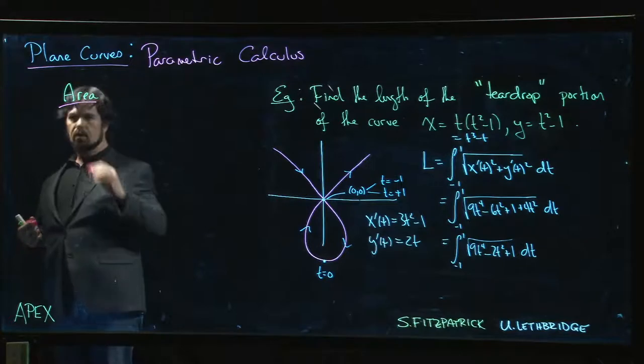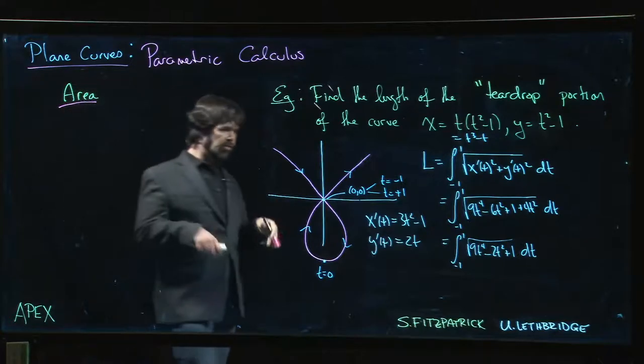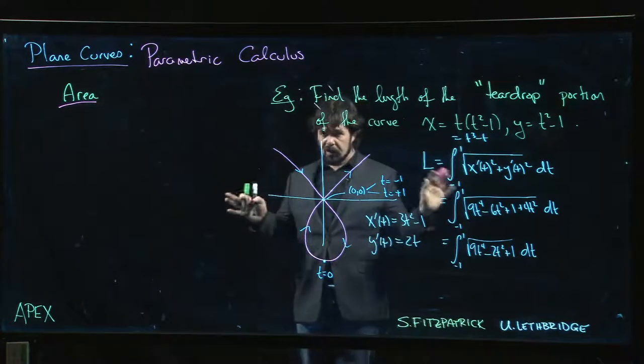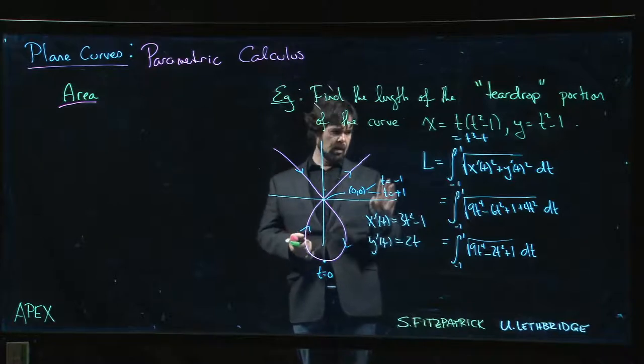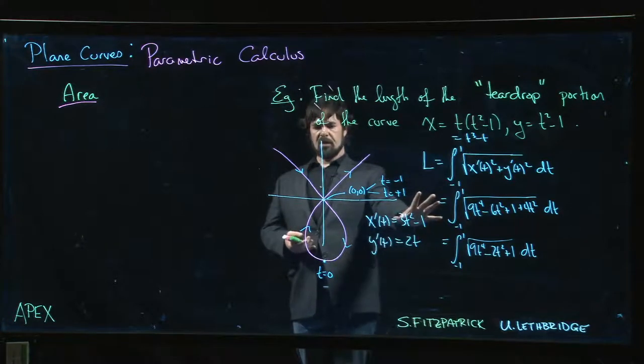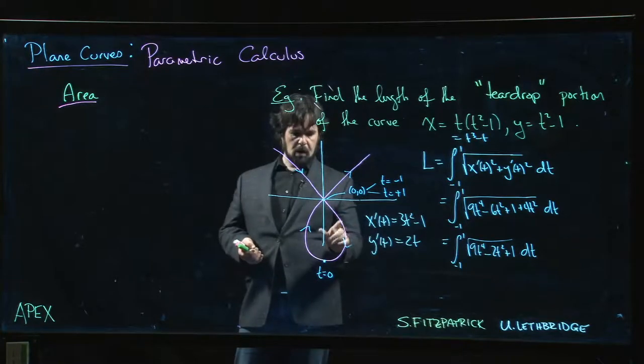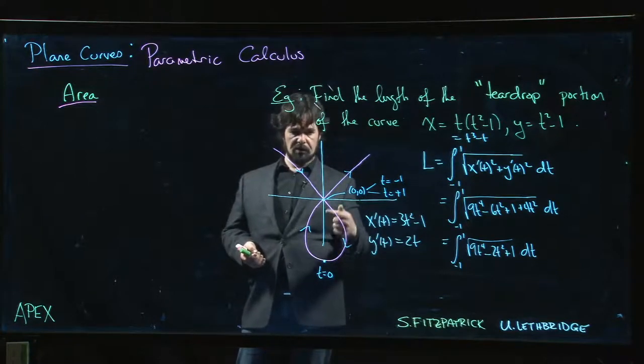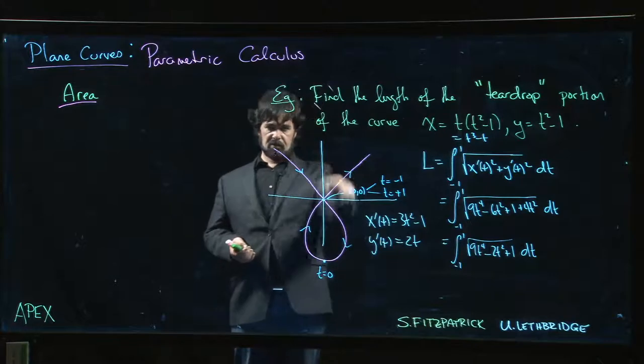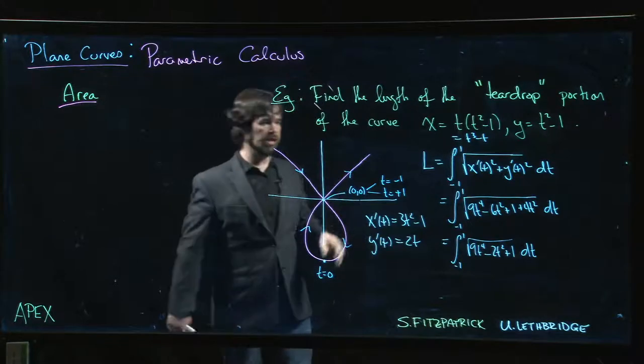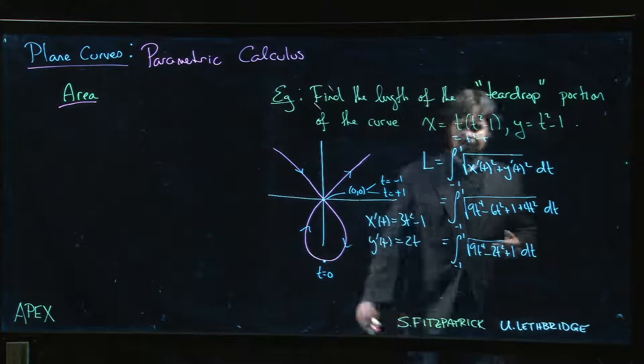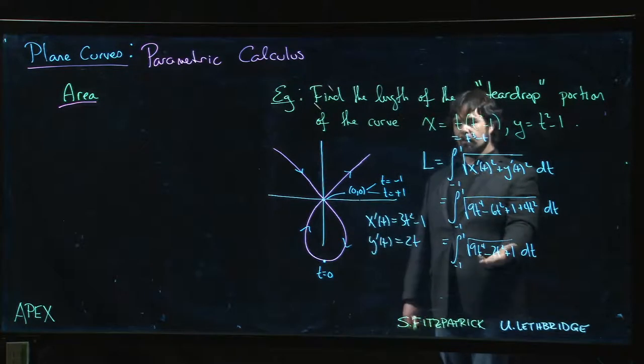Now I know the book does surface area, and you're probably wondering where that example is. One of the examples the textbook does is the surface area of the object that you get if you revolve this thing around, I think around the x-axis. You get this funny kind of donut-looking thing.